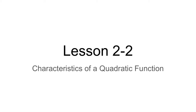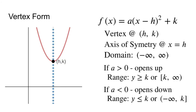Welcome to Lesson 2-2, Characteristics of Quadratic Functions. We'll talk about two forms of quadratic equations in this lesson. The first, of course, is vertex form, which was all in Section 2.1. So just a quick overview of vertex form. You'll see that f of x is equal to a times the quantity of x minus h squared plus k, where h, k is the vertex.